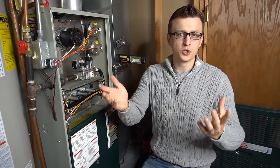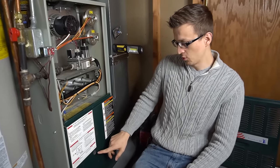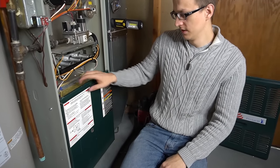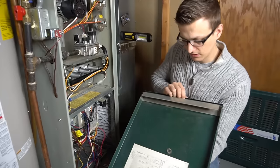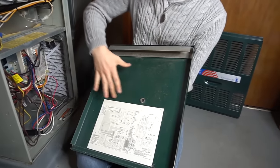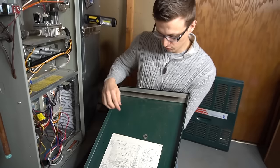Today I want to talk about a tripped rollout switch or flame rollout switch, which usually goes hand in hand with your control board blinking an error code. If you take your furnace door off, there will be a chart that explains the code blinking on your control board.